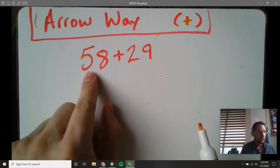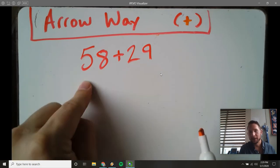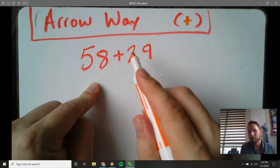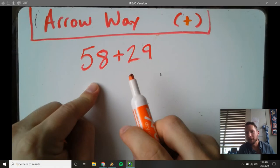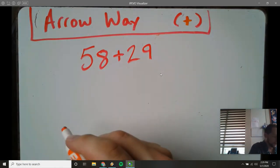So here when you're adding, I would always start with the biggest number because that means you don't have to add as much. You don't have to do as many steps. So we can start with 58.